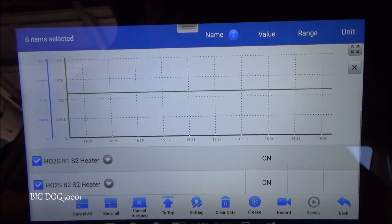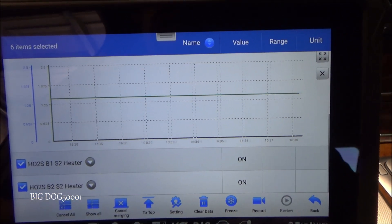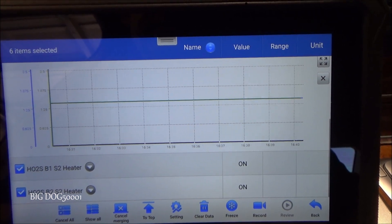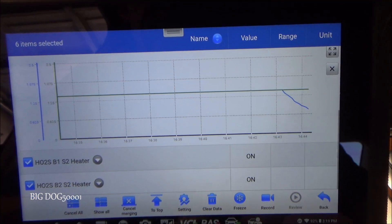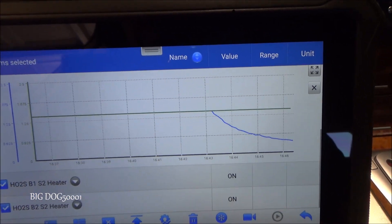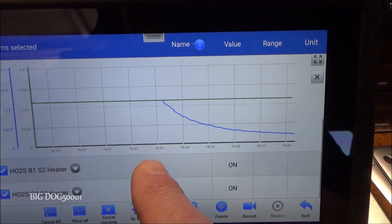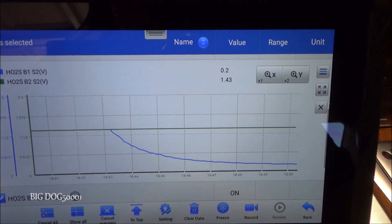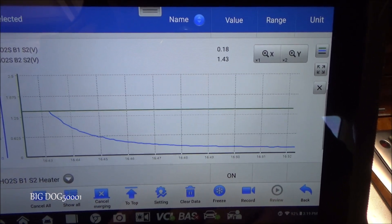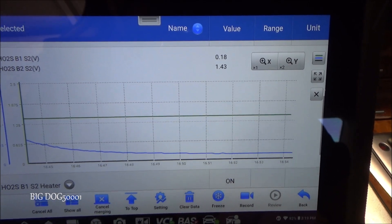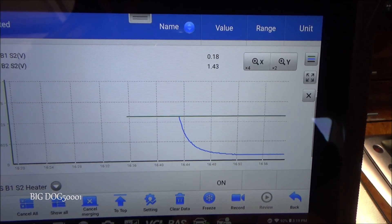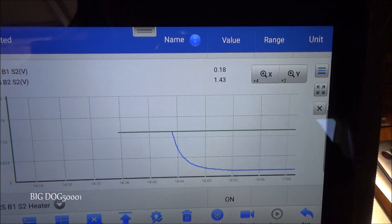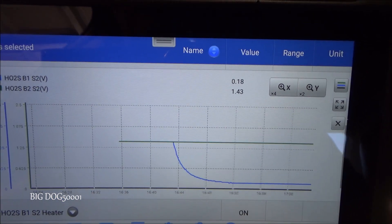Alright it's on. Vehicle's on. So we'll see what happens. Ah I have the wrong data pid here. I'm going to have to switch that out. But right now we can see that Bank 1 sensor 2 is already active. See that? So that's a good sign that that one's working.